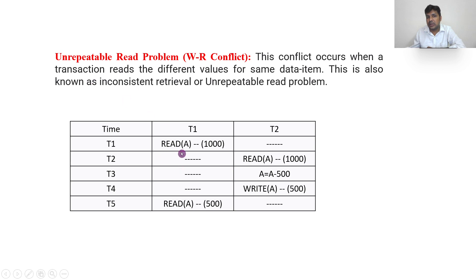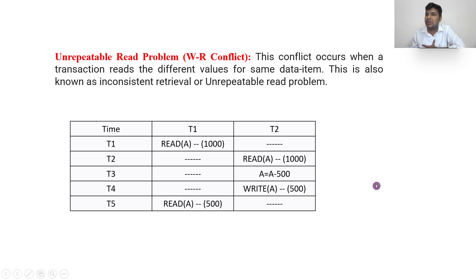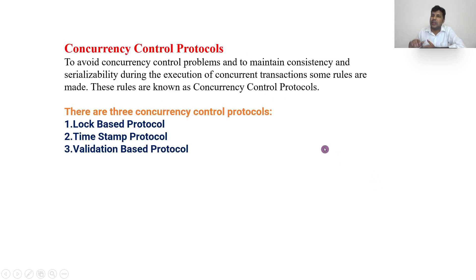Another problem is the unrepeatable read problem. This conflict occurs when a transaction reads different values for the same data item at different times. For example: T1 reads A as 1000. T2 also reads A as 1000, then withdraws 500 and writes 500. Now T1 reads again and gets 500. T1 is getting two different values — 1000 and 500 — in the same transaction. This is called an unrepeatable or non-repeatable read problem.